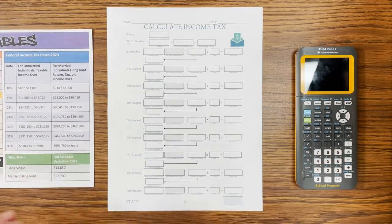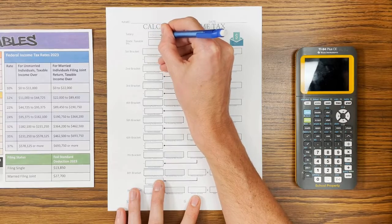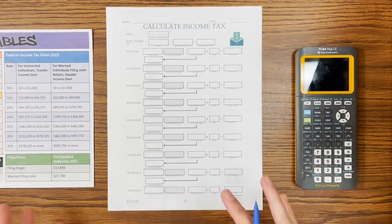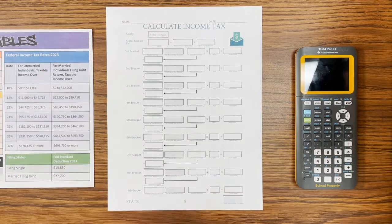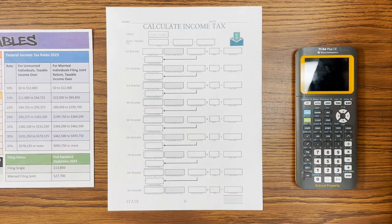You can find both of those at phieducator.store if you are looking for those. We're going to do a $100,000 salary as an example — not because it's average income or anything like that, just because it's a nice round number. It lets us go through a bunch of brackets and get a good idea of what calculating a Maryland state tax return might look like. This is not tax advice — please consult a CPA if you have specific tax questions. This is for educational and entertainment purposes only.